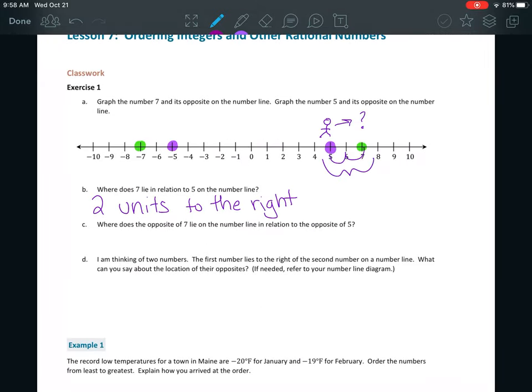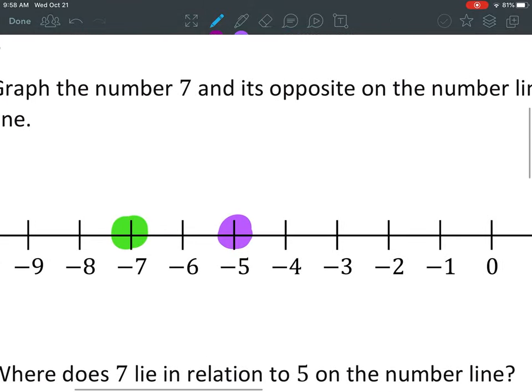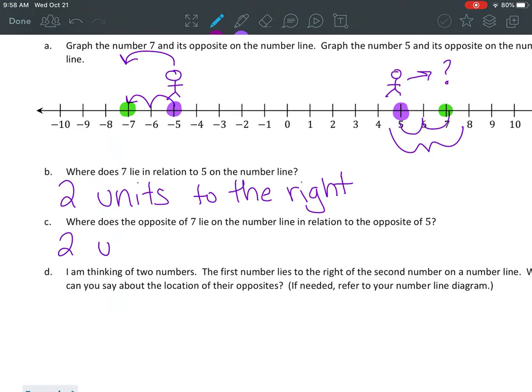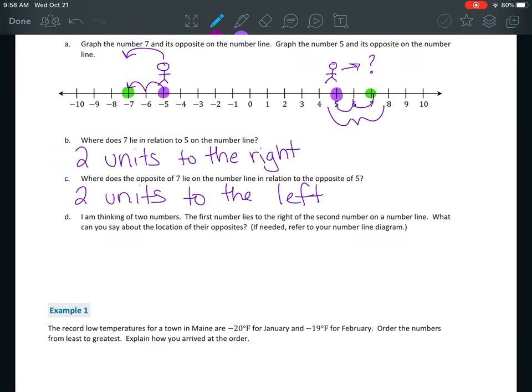Where does the opposite of 7 lie on the number line in relation to the opposite of 5? So this time we're looking at negative 7 and negative 5. So I'm standing on negative 5. How do I get to negative 7? So if we're standing on 5 and negative 5, I have to move in opposite directions. So if we move right, that means we're getting bigger. If we move left, that means we're getting smaller. So 7, we had to move right to get there. So that means 7 is larger than 5. But when I was standing on negative 5, I had to move left. So that means negative 7 is less than negative 5.